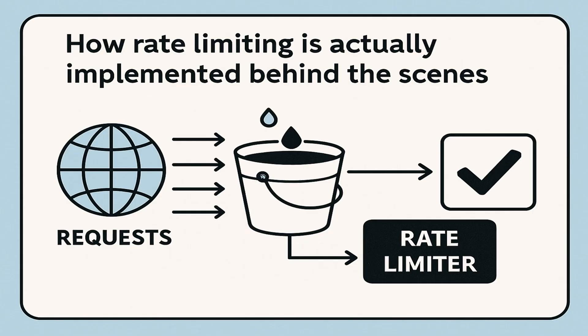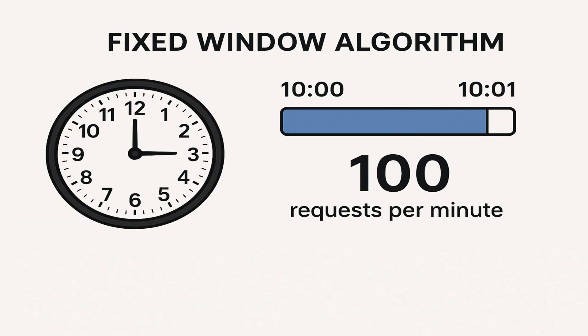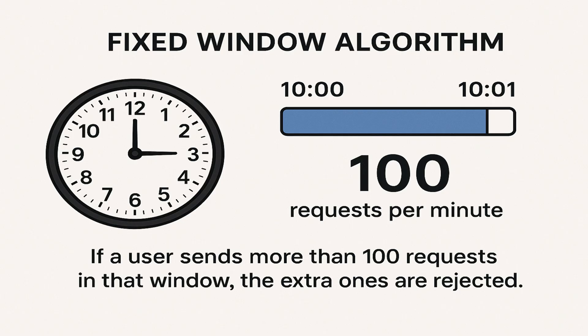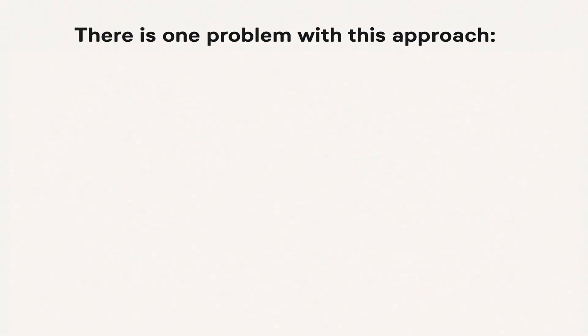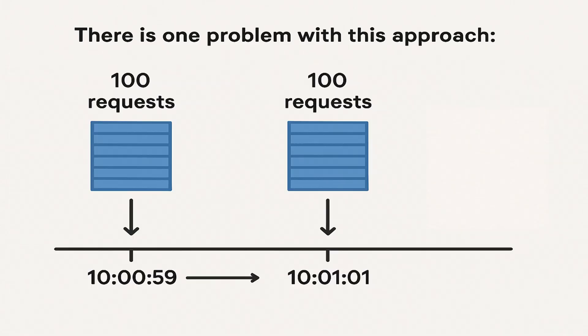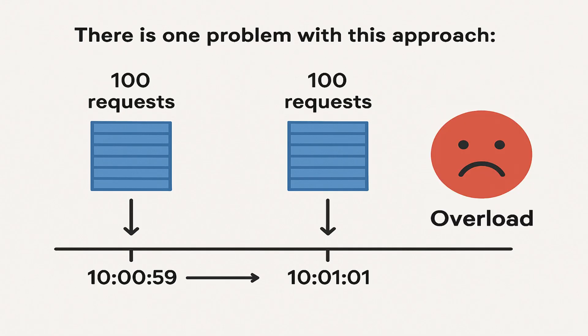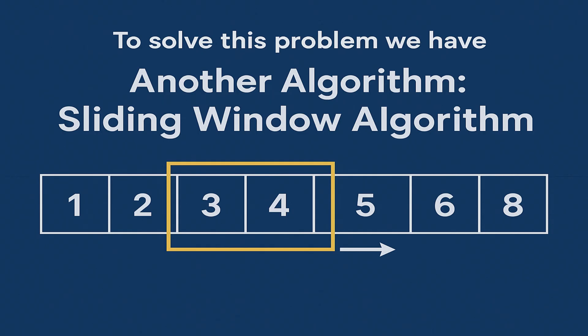Now let's talk about how rate limiting is actually implemented. There are different algorithms used to enforce rate limits. The first one is the fixed window algorithm. Time is divided into fixed windows, like one minute or one hour. For example, if the limit is 100 requests per minute and the current window is from 10:00 to 10:01, the system counts requests in that minute. If the user sends more than 100, the extras are rejected. At 10:01, a new window starts and the counter resets to zero. This is very simple and easy to implement.